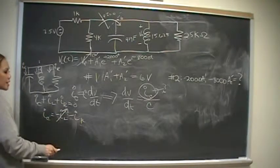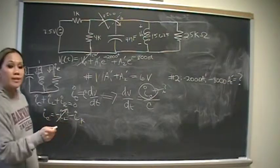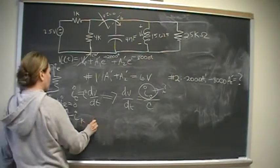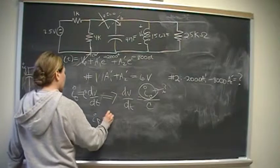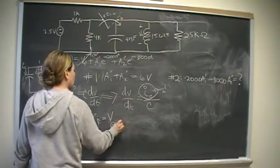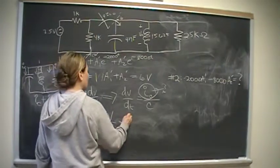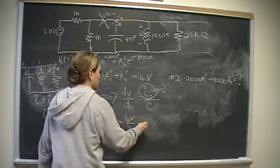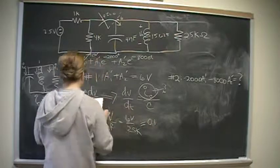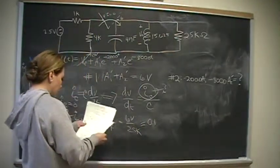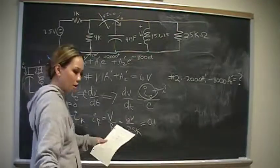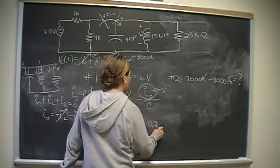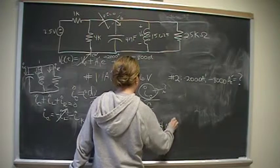The only thing we need to find out is what is the current across the resistor right after the switch flips. Well, current across the resistor, I sub R, we use Ohm's law, V over R. That gives us six volts divided by 25 kilo ohms, which is 0.24 milliamps.